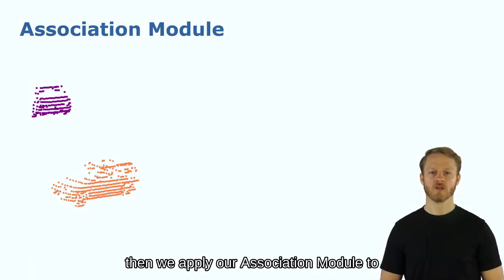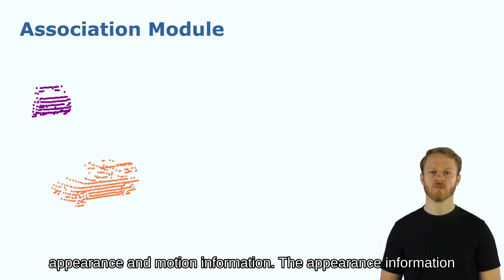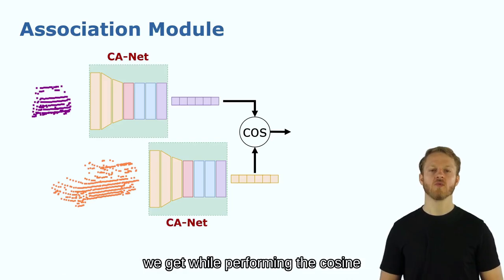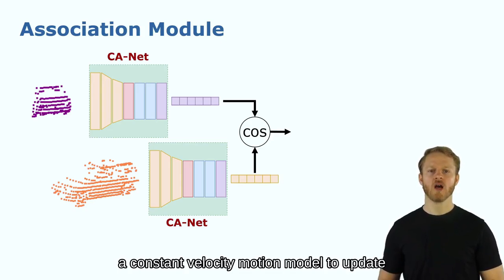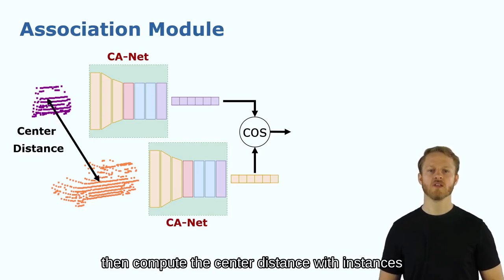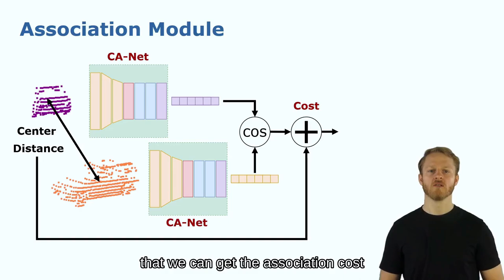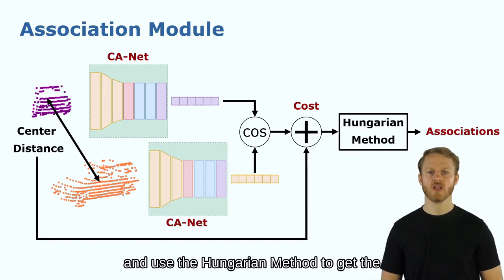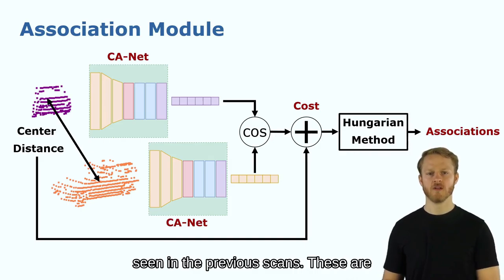Then we apply our association module to associate the instances over time by using appearance and motion information. The appearance information we get while performing the cosine similarity between these generated features. We apply a constant velocity motion module to update the positions of the instances in previous scans and then compute the center distance with the instances of the current scan. Once we have that, we can get the association cost and use the Hungarian method to get the associations. This means how to associate the instances in the current scan with the instances seen in the previous scans.